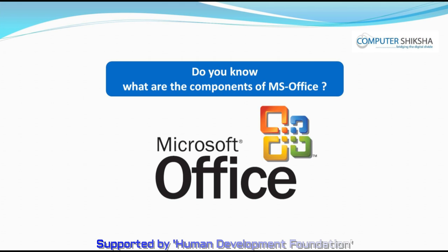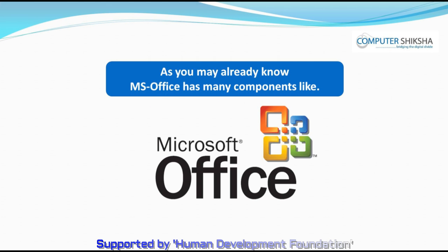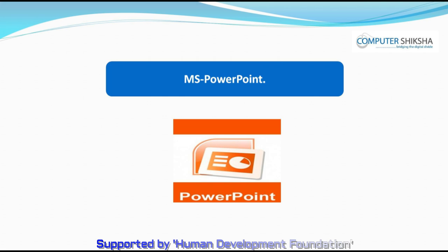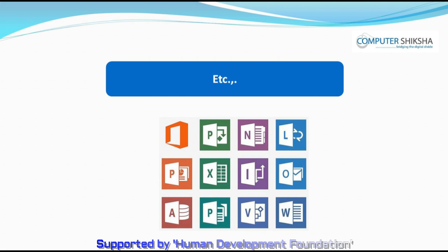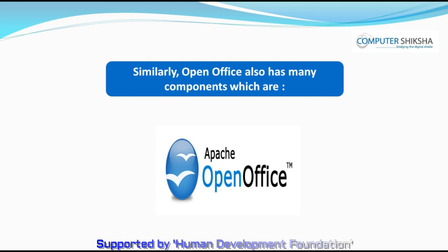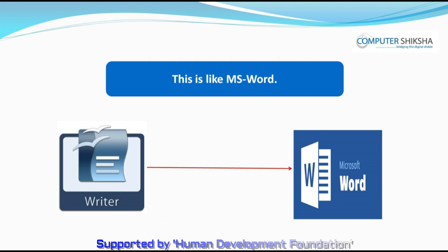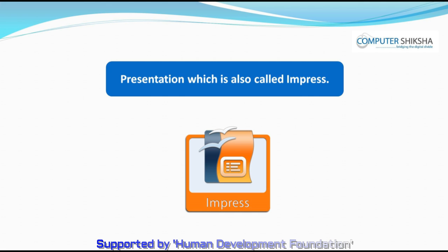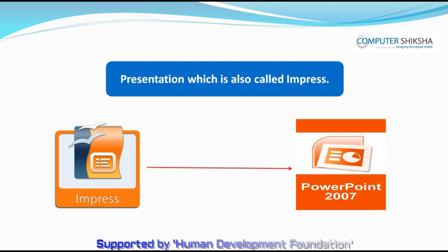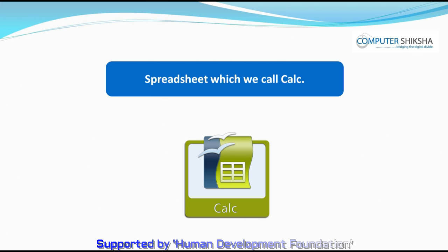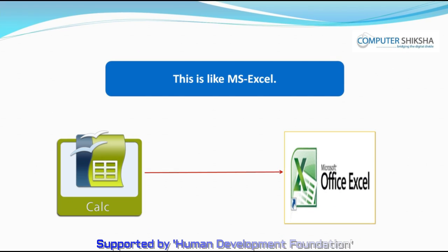Do you know what are the components of MS Office? As you may already know, MS Office has many components like MS Word, MS PowerPoint, MS Excel, etc. Similarly, OpenOffice also has many components: text document which we call Writer — this is like MS Word; Presentation, which is also called Impress — this is just like MS PowerPoint; and Spreadsheet, which we call Calc — this is like MS Excel.